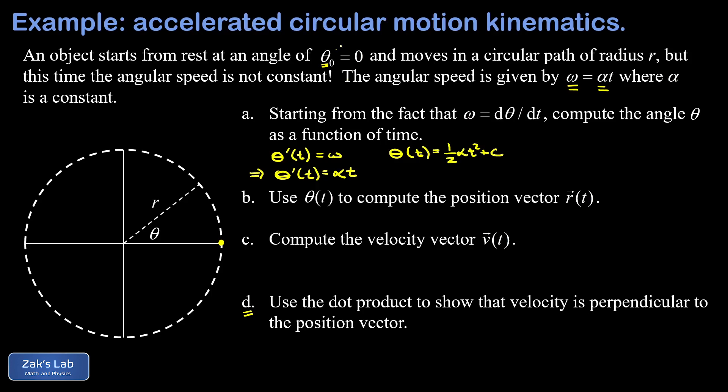This is where the initial condition comes in—the initial angle being zero. I sub in t equals zero, and I get theta of zero. This t-containing term dies, and I end up with just c. And this means that c is my initial angle, theta naught.